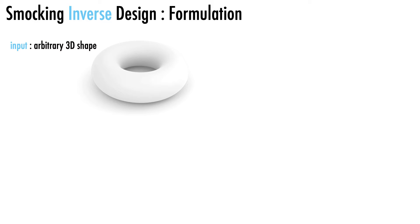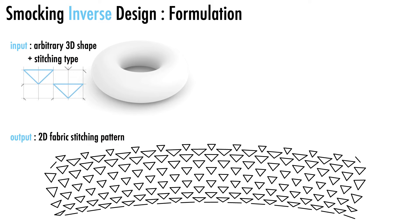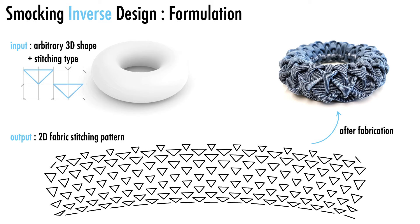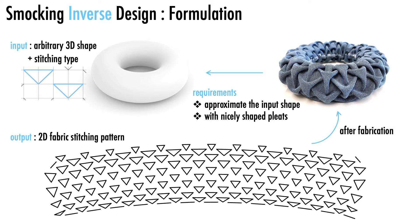Concretely, when provided with a 3D shape and a stitching type as input, our aim is to compute a precise 2D stitching pattern. Following the fabrication process, the expected outcome is a close approximation of the input shape with regular pleats. We call it the fabric tessellation problem.